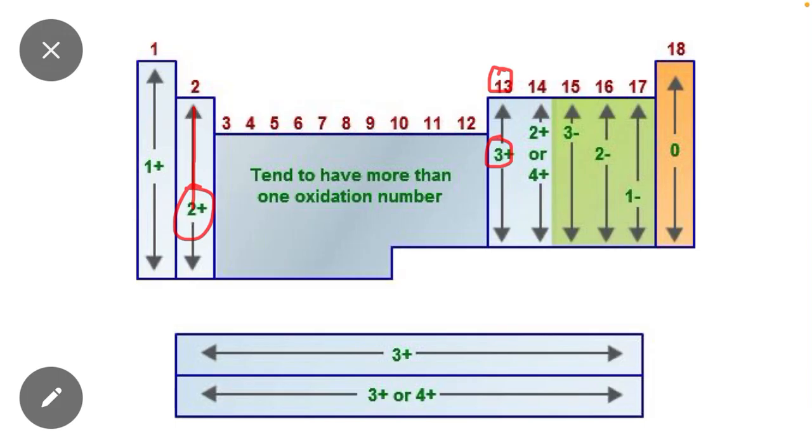And group 14 shows two types of oxidation state: plus two oxidation state and plus four oxidation state.